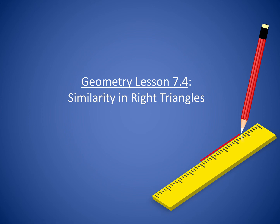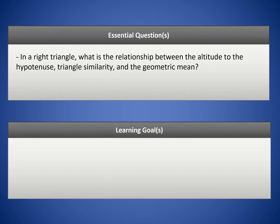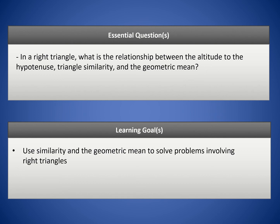Hello class, welcome to Geometry Lesson 7.4, Similarity and Right Triangles. Our essential question today is: in a right triangle, what is the relationship between the altitude to the hypotenuse, triangle similarity, and the geometric mean? Our goal is to use similarity and the geometric mean to solve problems involving right triangles.